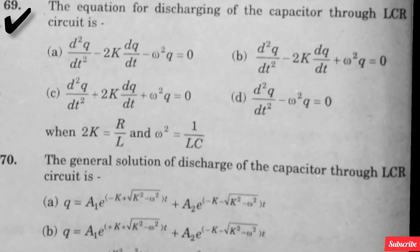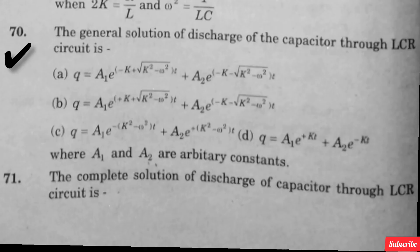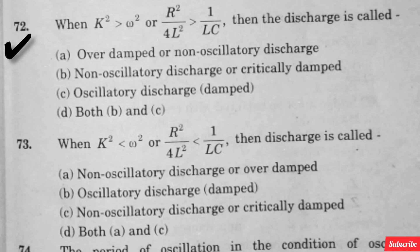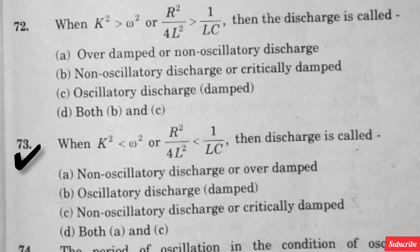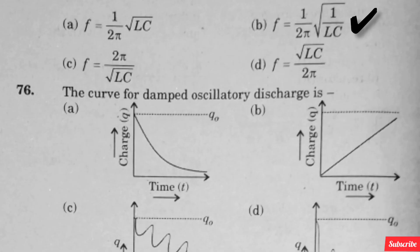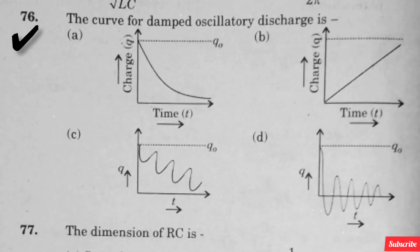The equation for discharging of the capacitor through LCR circuit is — option C is right. The general solution of discharge of the capacitor through LCR circuit is — option A is right. The complete solution of discharge of capacitor through LCR circuit is — option B is right. When K² > ω² (R²/4L² > 1/LC), the discharge is called — option A is right. When K² < ω² (R²/4L² < 1/LC), the discharge is called — option B is right. The period of oscillation in the condition of oscillatory discharge is — option C is right. The frequency of oscillation in oscillatory discharge is — option B is right.